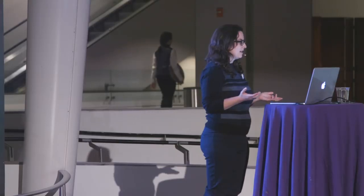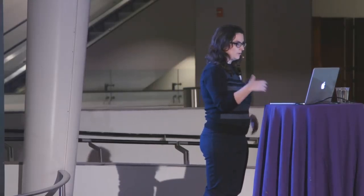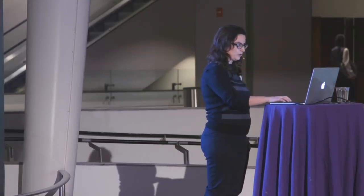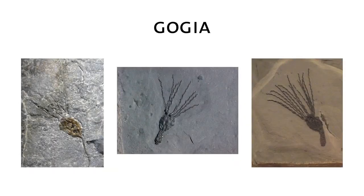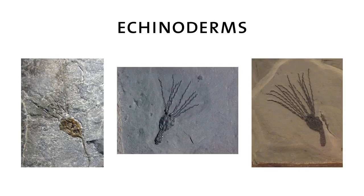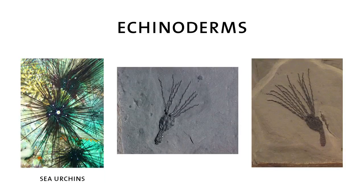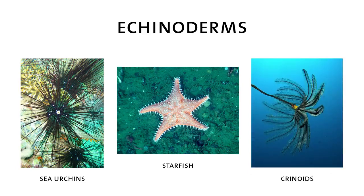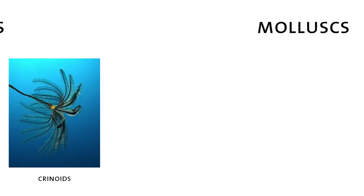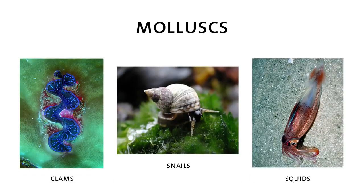Like I said, we can recognize these things. They look like we can relate them to modern groups. So there are things like gogia, this is an early echinoderm. Echinoderms include things like sea urchins and starfish and crinoids. There are really early mollusks. Mollusks include clams and snails and squids.